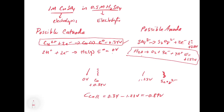That gives you a sense of how to think about this. Basically, the only processes that are going to happen are between 0 volts and 1.23 volts, and you have to look at where your possible cathode and anode reactions fall. In this case, we get the reduction of copper and the oxidation of water, because SO₄²⁻ falls outside of the electrochemical window.